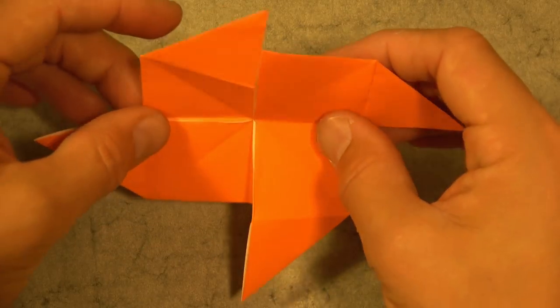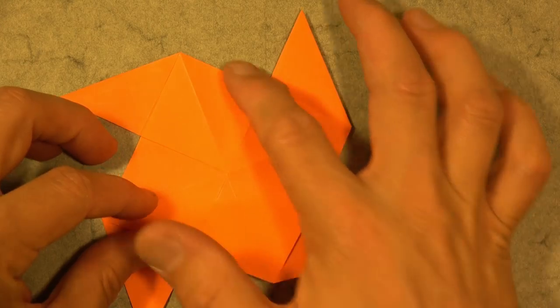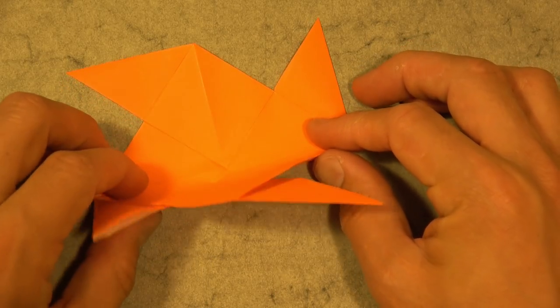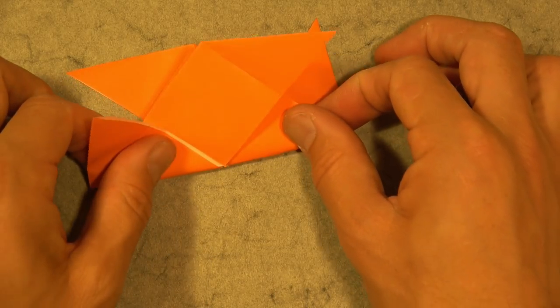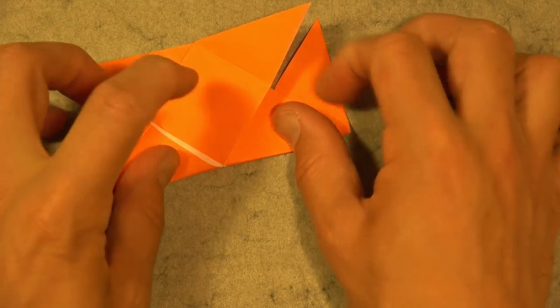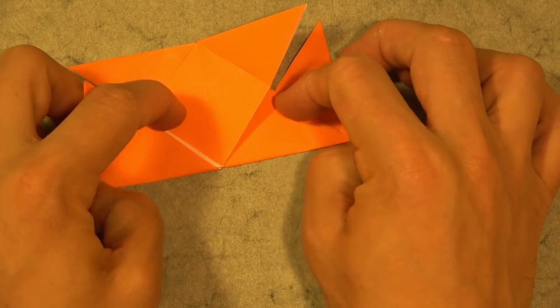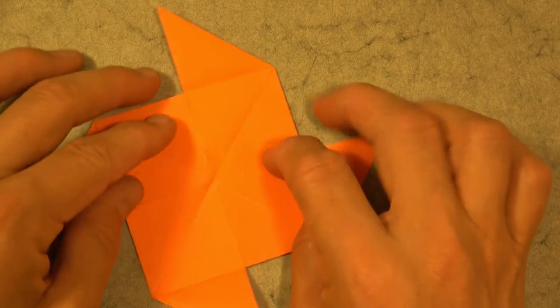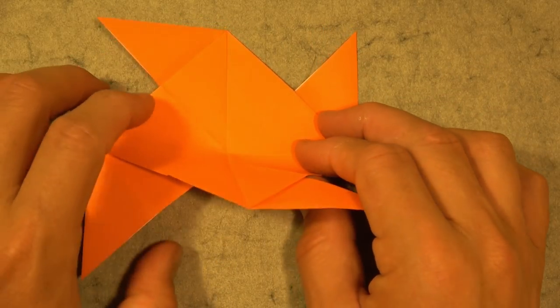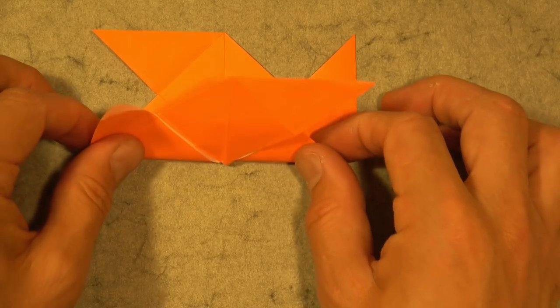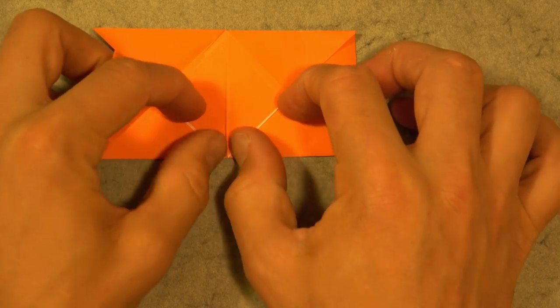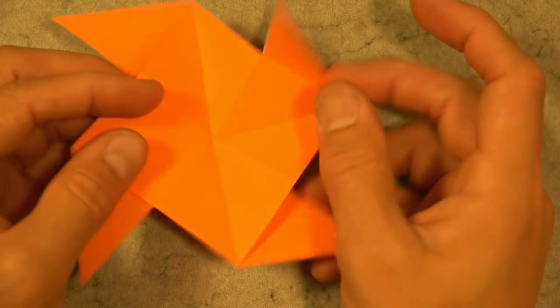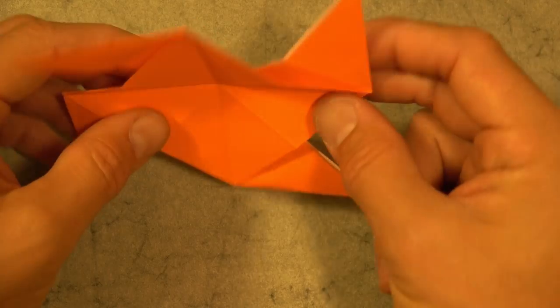And now turn over. And now we're going to fold this square diagonally in half. So it's like this. And unfold. And rotate. And fold it in half. Like this. And unfold. And turn over.